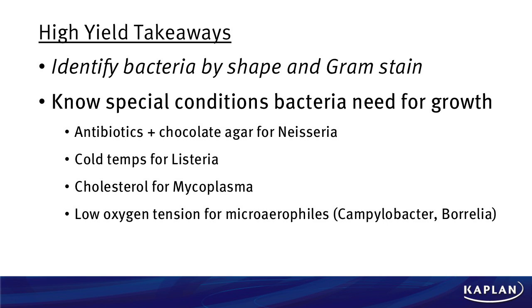Definitely a good critical thinking question. Some takeaways: number one, you have to be able to identify bacteria by shape and gram stain — gram-negative bacilli, bacilli vs. cocci, gram positive vs. gram negative. The other part of this question is knowing special conditions needed for growth. Some of the wrong answers: antibiotics and chocolate agar are for the Neisseria species. Cold temperatures was for Listeria. We need agiocholesterol to grow Mycoplasma. And low oxygen tension is for microaerophiles like Campylobacter or Borrelia. But for this one, you knew the answer was Staph aureus on blood agar because you identified H. influenzae and knew the growth factors it needed.